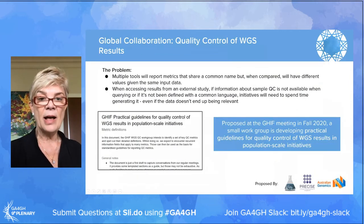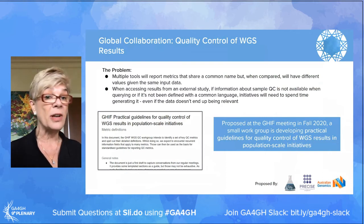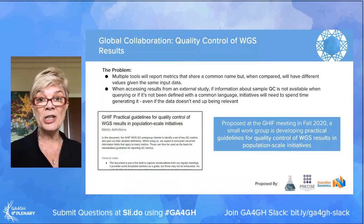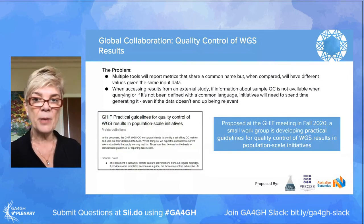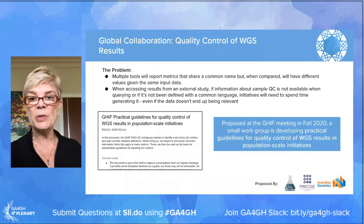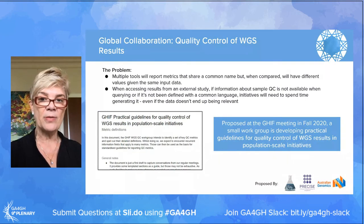Another example of what we're doing is providing practical guidelines for quality control of whole genome sequencing results. As well as making sure we're speaking the same language, we need to ensure similar quality in our genomic data outputs. This was proposed at a meeting in 2020, and now a working group has delivered some great results.